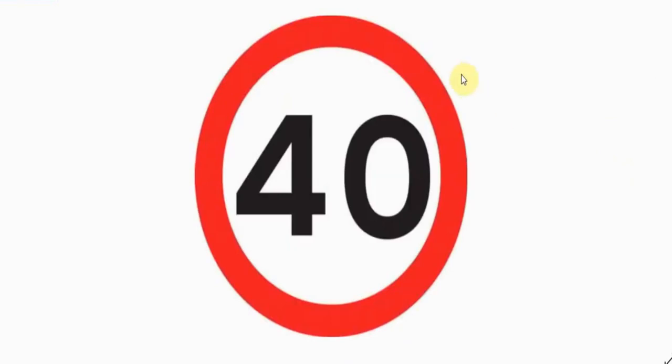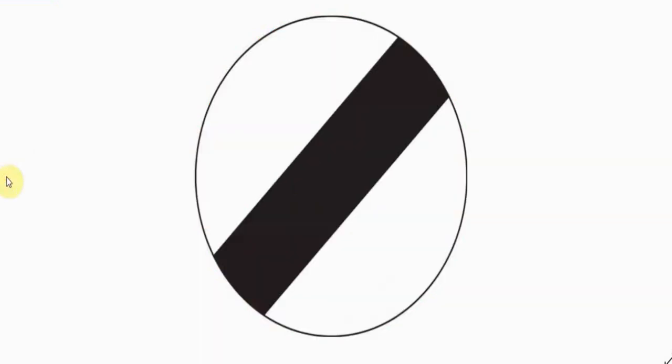The more common speed limit signs are red circles with a number in the middle. The number denotes the maximum speed you're allowed to do on that road. On this particular road you're only allowed to go at 40 miles an hour or less. Remember, that's not a target - it's the absolute maximum you're allowed to go. Sometimes it will say 20, 30, 50, and then the national speed limit sign, which is 60.